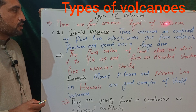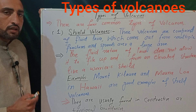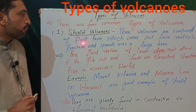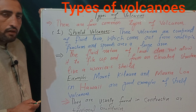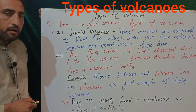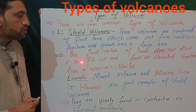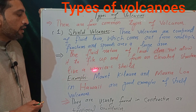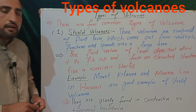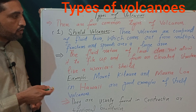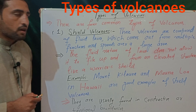There are four common types of volcanoes which we will discuss one by one. The first common type is known as shield volcanoes. These volcanoes are composed of fluid lava which comes out from multiple fractures and slides over a large area. The fluid nature of lava does not allow it to pile up and form an elevated structure — like a warrior's shield.